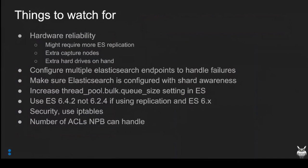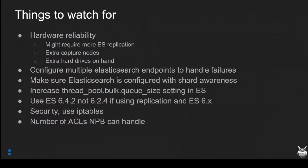Pay attention to your replication level, especially when scaling. If you've upgraded to Elasticsearch 6, use 6.4.2 and not 6.2.4 — 6.2.4 has weird replication issues; 6.4.2 has that fixed. For security, use IP tables. Please use IP tables with Elasticsearch — or if you're paying money, use X-Pack. Don't have it open on your internal network, because if anyone gets onto it they can see everything. Also watch the number of ACLs your NPB can handle if you're doing a lot of traffic reduction.